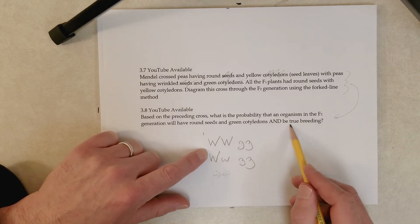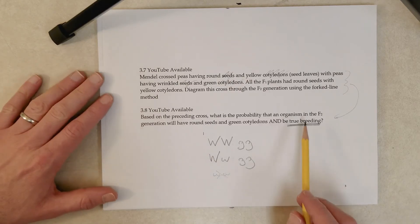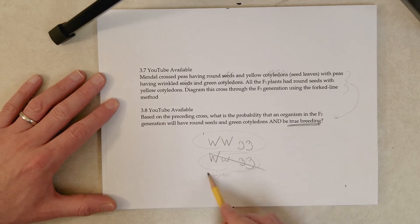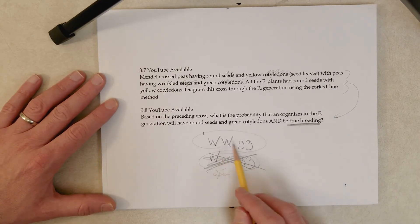So, the question, however, says it has to be true breeding, right? So, only one of these genotypes is true breeding. This one up here, true breeding is homozygous, so homozygous for both pairs of alleles.